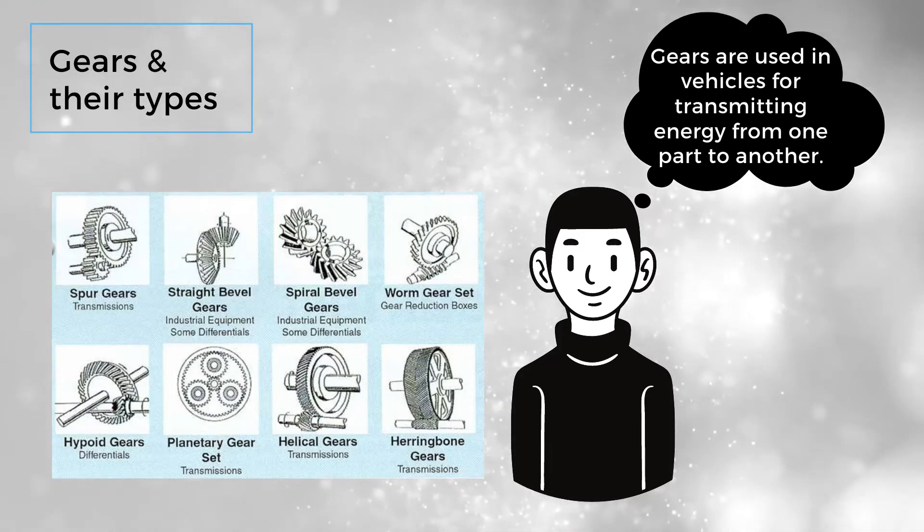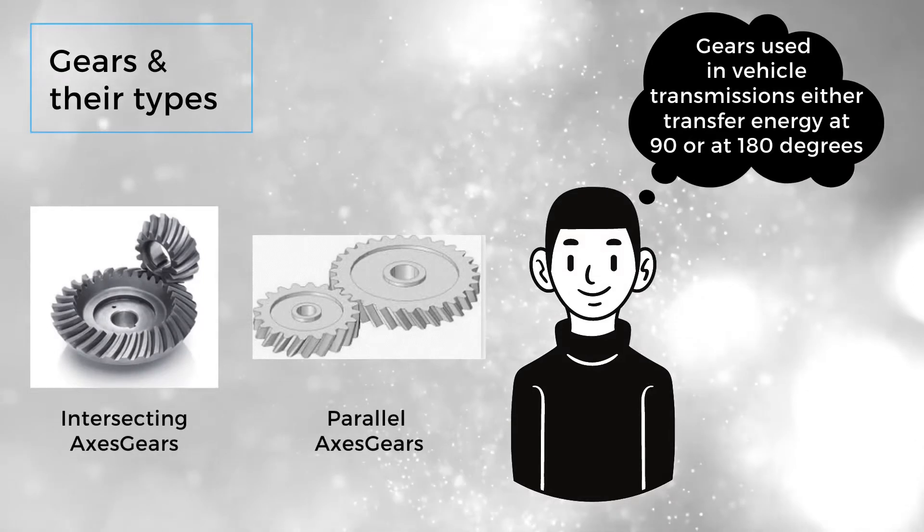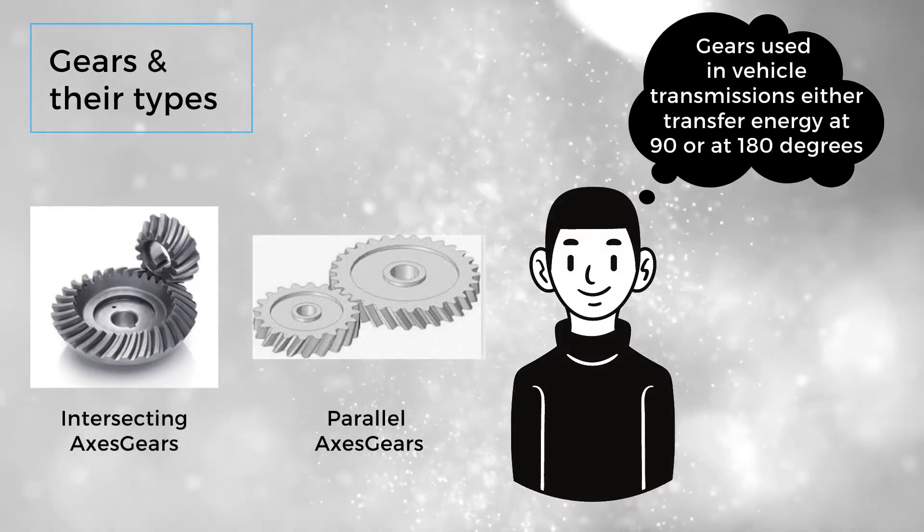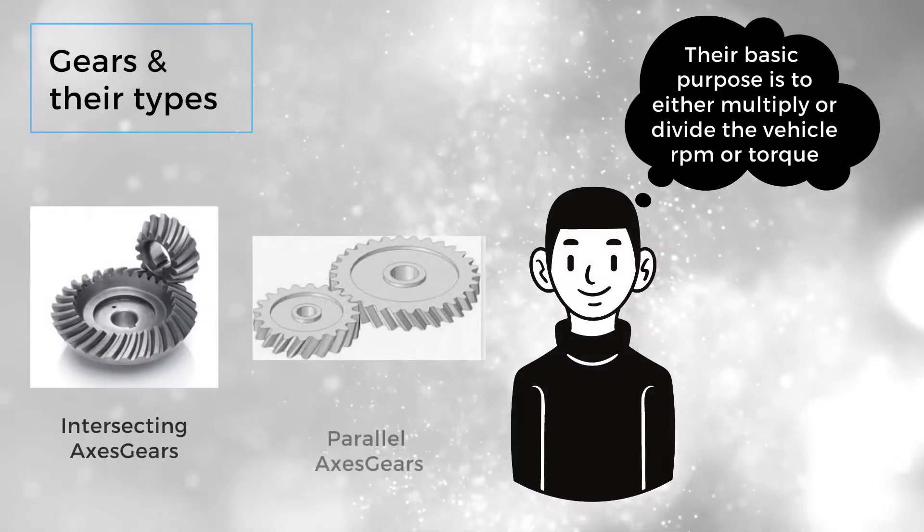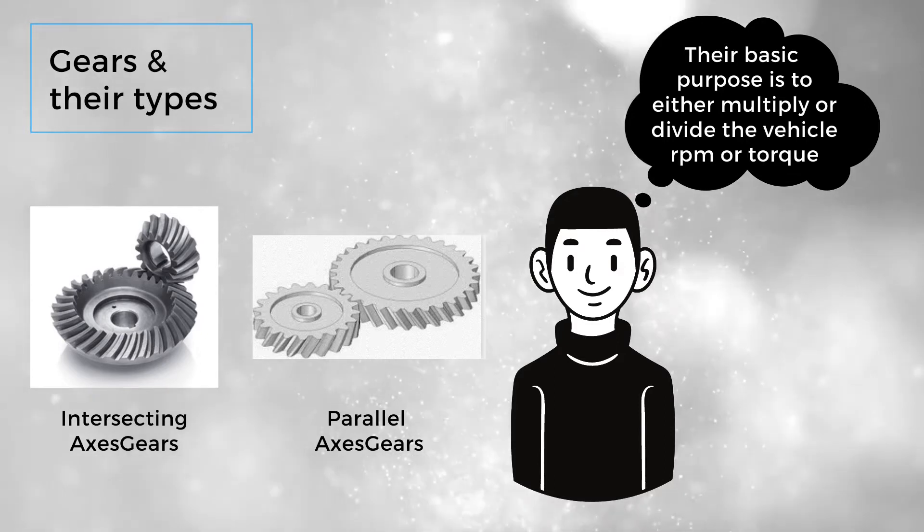Gears are used in vehicle transmissions to transfer energy at 90 or 180 degrees. Their basic purpose is to either multiply or divide the vehicle RPM or torque.